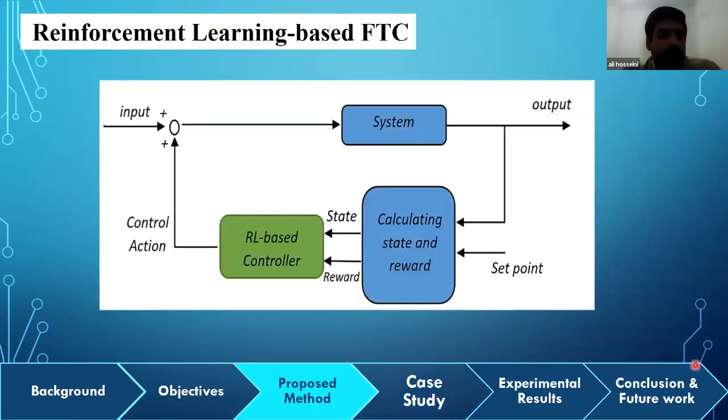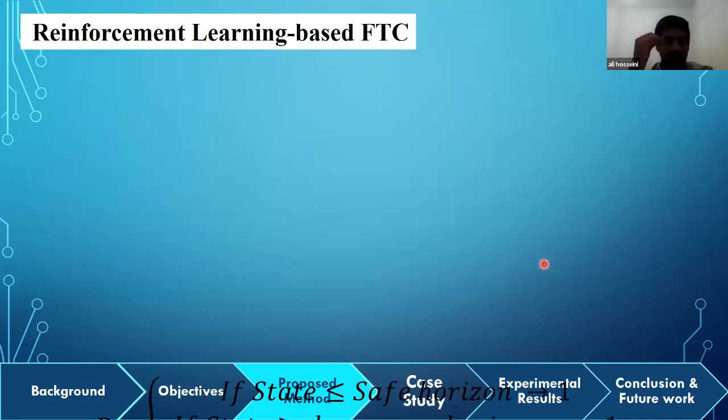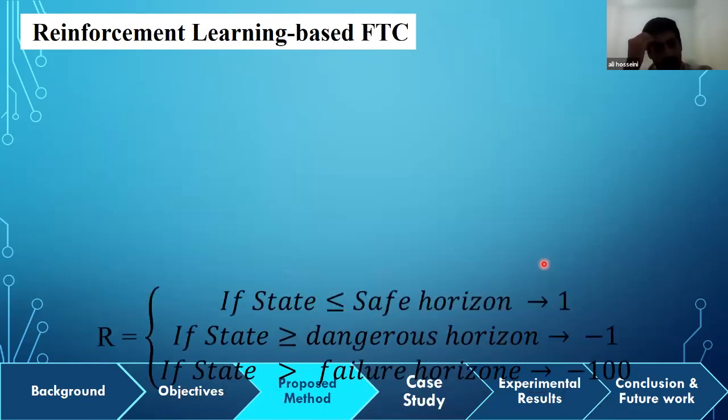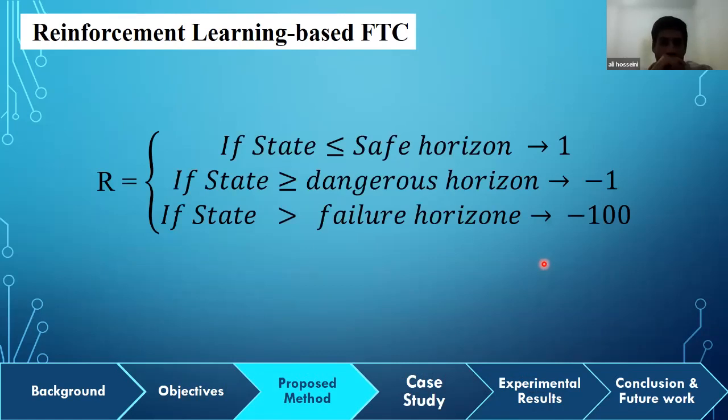Now, I want to talk about the reinforcement learning-based fault-tolerant control. As shown in this slide, we use a block diagram to calculate the state and reward by knowing the real output and our set point. In this paper, the state was calculated according to the difference between the output and the set points. A reward is attributed to the current state as can be found here. As you can see, we divided our horizon into three horizons: safe horizon, dangerous horizon, and failure horizon.